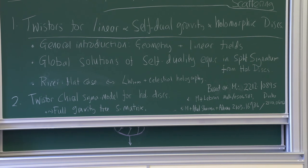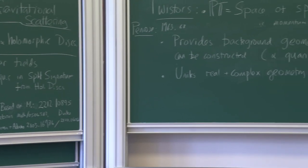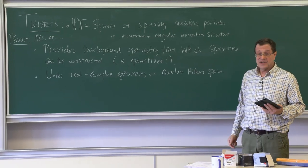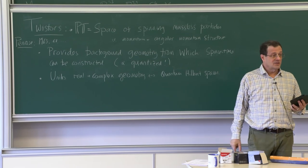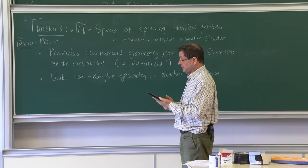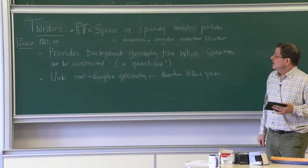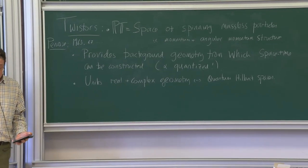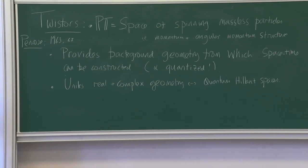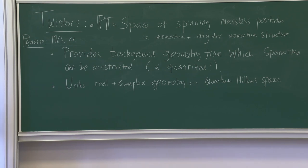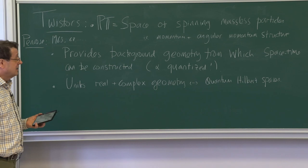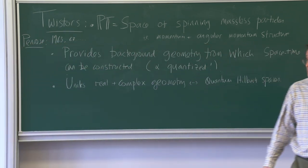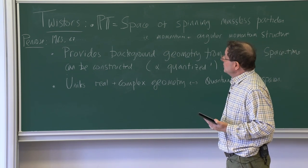Now I'd like to start talking about what Twister theory is. These are meant to be introductory lectures, so if I'm becoming incoherent please do ask lots of questions. Twisters have a long history — the first papers are from 1967 by Roger Penrose. If you interview him, he'll talk about how the ideas came out of a long silent drive home from Dallas after the assassination of JFK. He was obviously not sufficiently disturbed to stop thinking about mathematics.